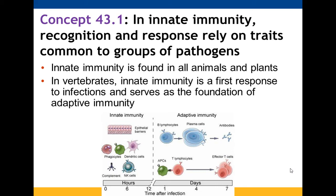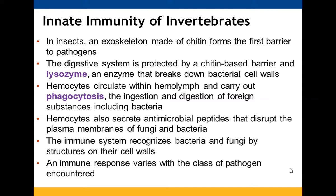Innate immunity is found not just in animals but also in plants. It's essentially your first line of defense and leads the way for adaptive immunity. Invertebrates only have innate immunity — insects, for example, have an exoskeleton that serves as a barrier.